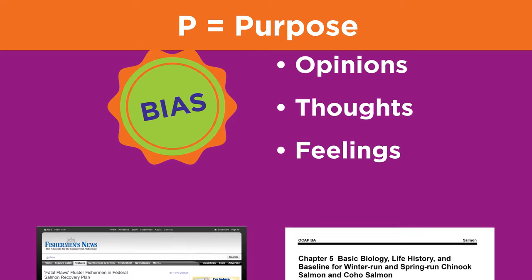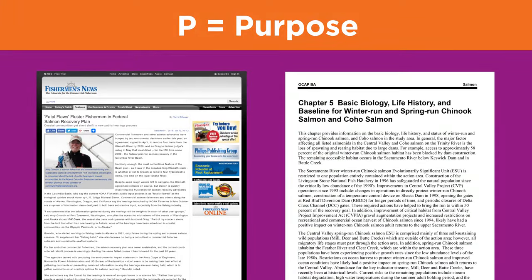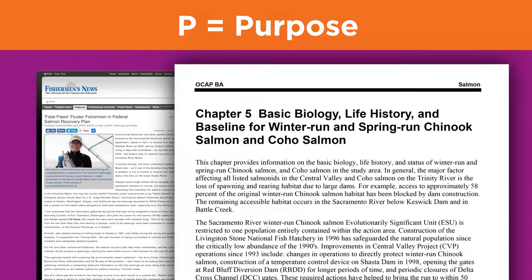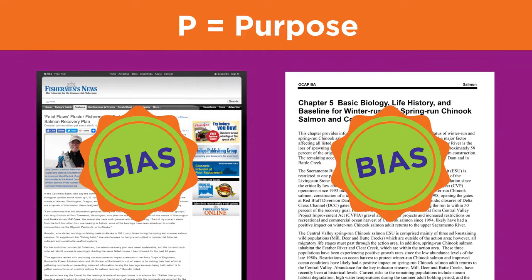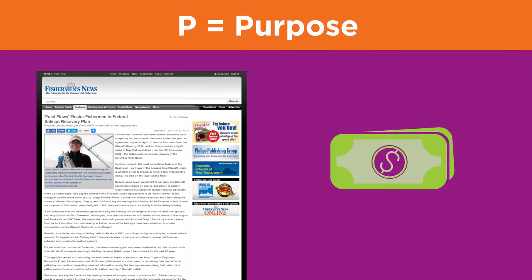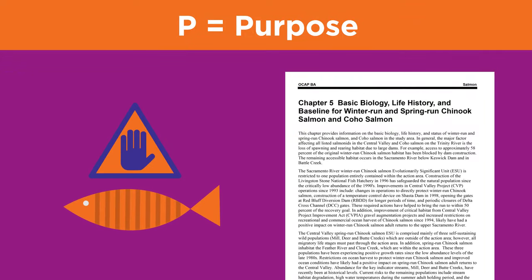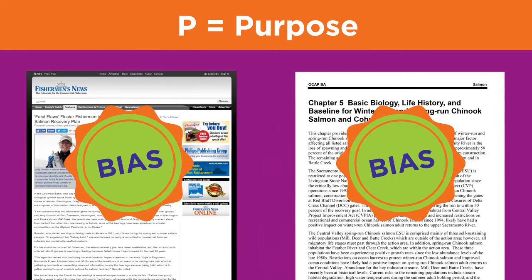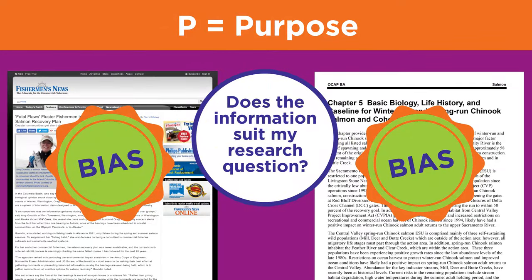The information a person or group presents reflects his or her bias. An article about salmon runs from the fishing industry would emphasize a different point of view than an article written by a biologist. Both articles would contain biased points of view. The fishing industry's main goal is to make money from salmon fishing, while the biologist's main goal would be to limit fishing to preserve the salmon runs. Your job as a researcher is to recognize the biases in both points of view and decide if the information suits your research question or not. When you decide to use a site, knowing about the author's purpose will help you best use the information.